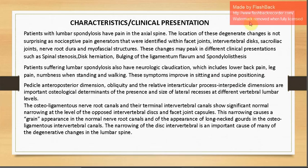Clinically, there will be pain because of degenerative changes and exposure of the subchondral bone. The location of degenerative changes is not surprising as nociceptive pain generators were identified within the facet joints, intervertebral discs, sacroiliac joints, nerve root dura, and myofascial structures. These changes may result in different clinical presentations such as spinal stenosis, disc herniation, bulging of the ligamentum flavum, and spondylolisthesis.